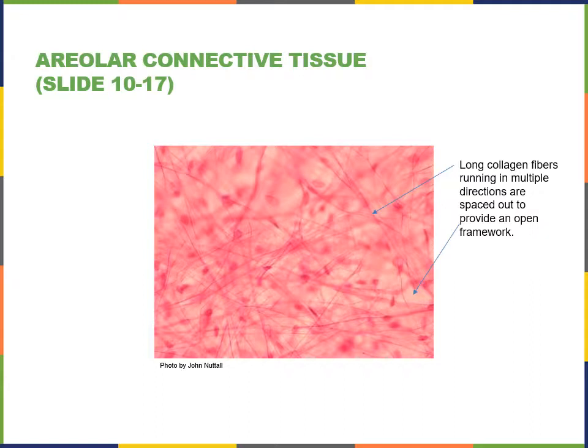The cell types include mesenchymal cells, which are stem cells that produce the variety of cells in connective tissue. Mesenchymal cells can differentiate into fibroblasts that produce the fibers of the extracellular matrix, and fibroblasts then differentiate into fibrocytes. Adipocytes and a variety of leukocytes are also found in areolar connective tissue.